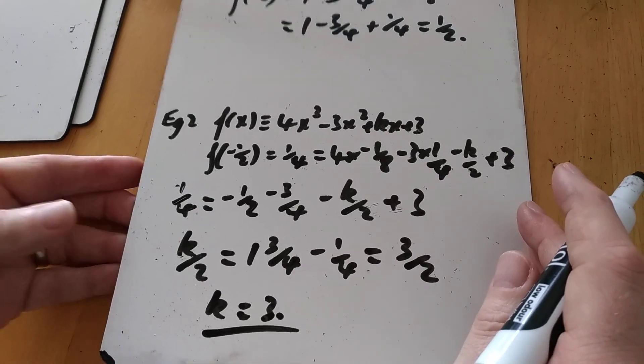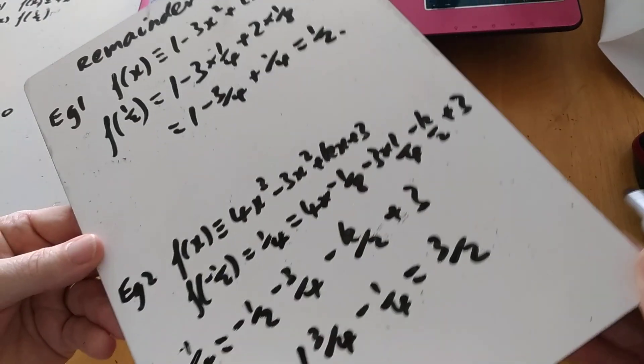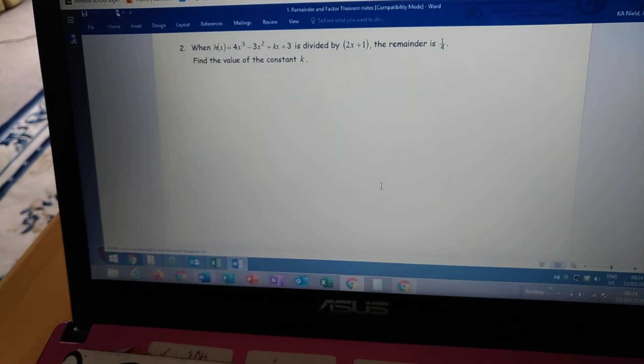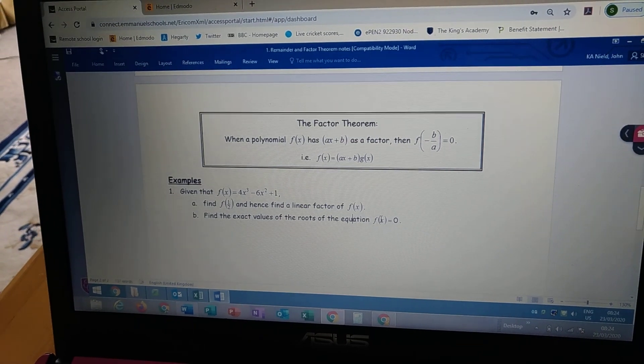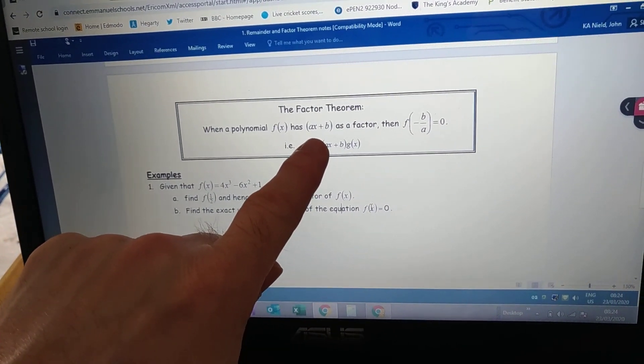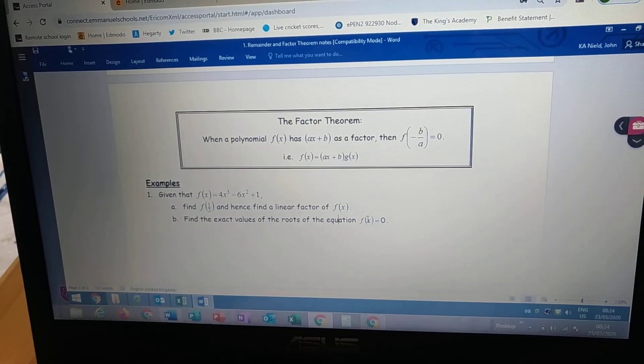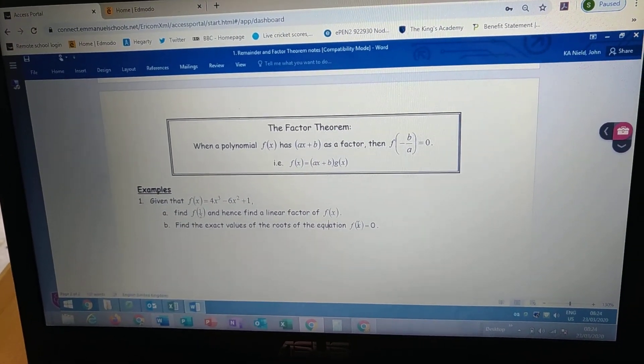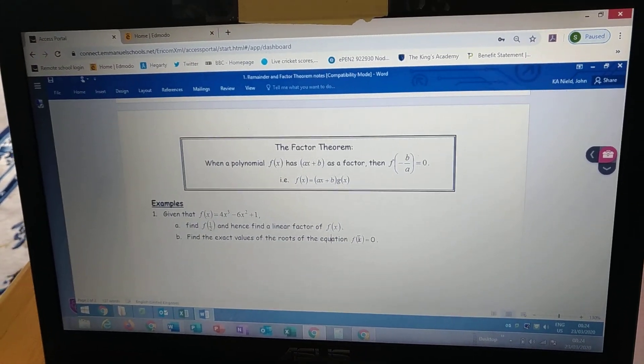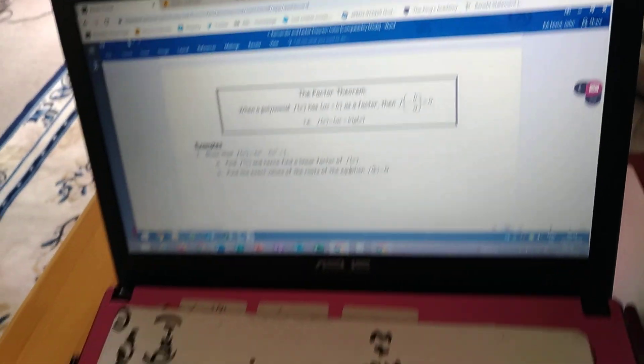That's the remainder theorem. That's all there is to it. A little teeny tiny bit of it. Most of it, though, we're going to look at is factor theorem. Let's have a look at the factor theorem. This is what we did in year 12. When a polynomial f(x) has ax plus b as a factor, then f minus b over a equals 0. Exactly the same idea, but we get 0 remainder, and then we can factorise it and hopefully look to solve equations.